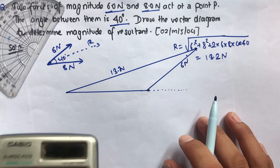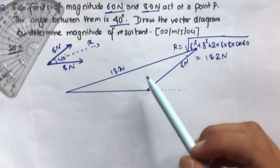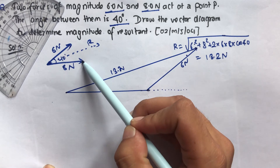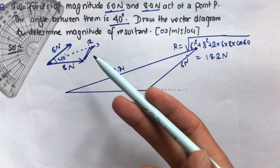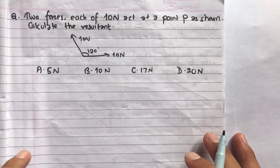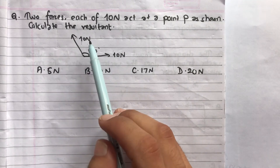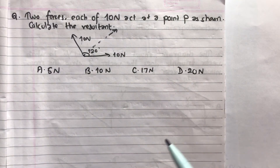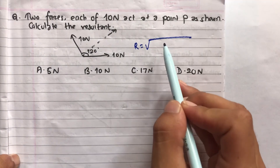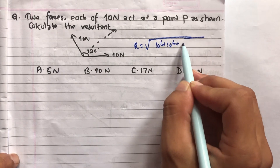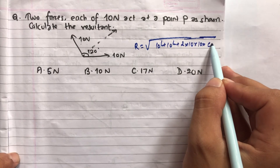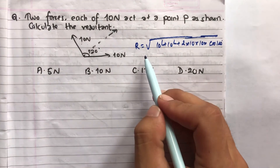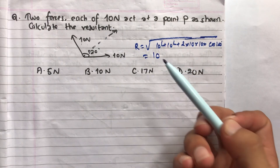For the next question, two forces each of 10 newtons act at point P. We need to find the resultant. Using the formula r = √(a² + b² + 2ab·cos θ), where theta is the angle between the two vectors, and calculating with the given angle using a calculator gives a value of 10 newtons, so option B is the answer.